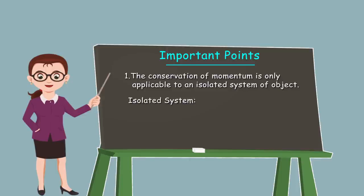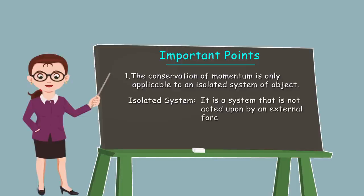An isolated system basically is a system that is not acted upon by any external force — yeh wo system hai jahaan par koi bhi unbalanced forces ko hum consider nahi karte. In this theory we are not going to consider any unbalanced forces, whether they are frictional or any other external forces.